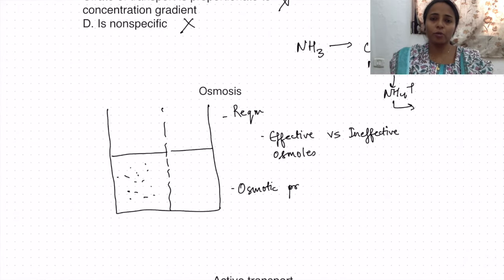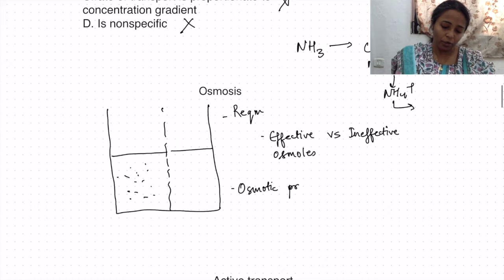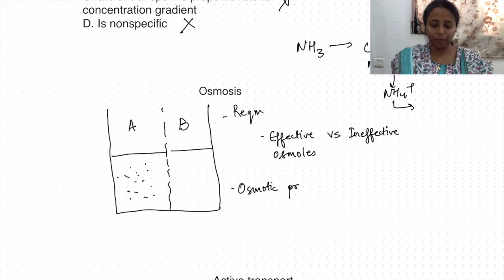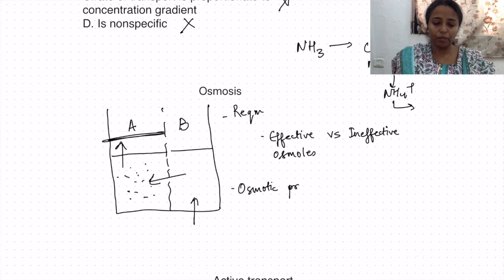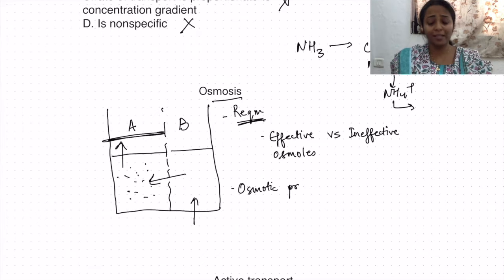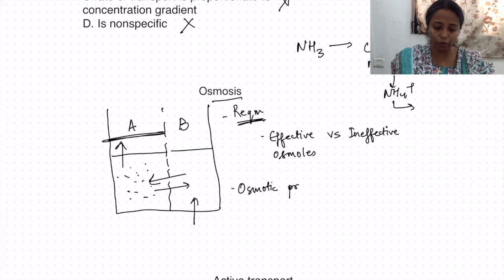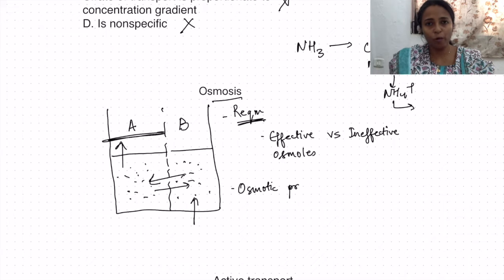Osmosis is the movement of water molecules from low solute concentration to high solute concentration. For example, if compartment A has solute and compartment B does not, water moves from B to A, causing the level in A to rise. A key requirement for osmosis is that the membrane must be permeable only to water, not to solute.